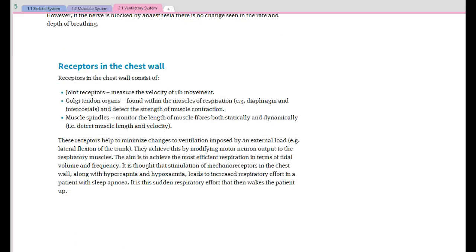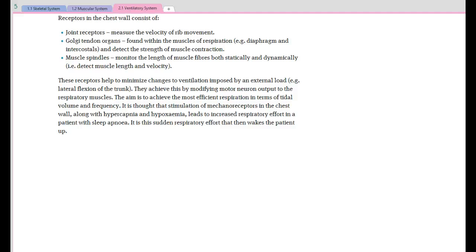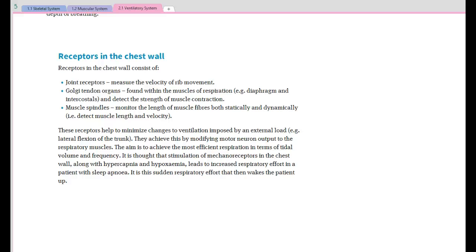Looking here at receptors in the chest wall - they are joint receptors. A joint receptor measures the velocity of movement of bones or joints, so this is really looking at the speed at which our ribs move. We have Golgi tendon organs, so these are looking at the strength or force of contraction. And lastly, we look at muscle spindles, which is looking at the length of muscles.